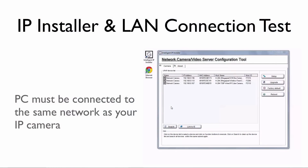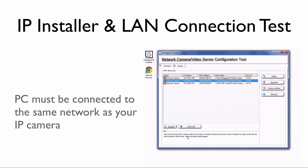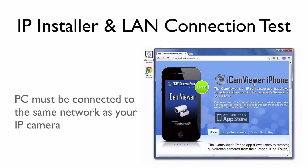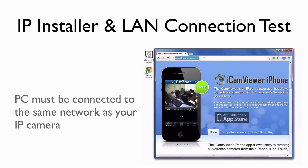The first step is to set up your IP camera on the local network that it will run on. Most IP cameras include a camera finder utility that will find all of the IP cameras on your local network. Here is the Intelligent IP Installer, which is the one included with Xavio cameras. This Xavio F3206 is the camera that we will connect to in the iCam Viewer app, so I make note of the IP address.